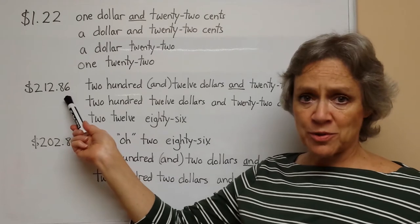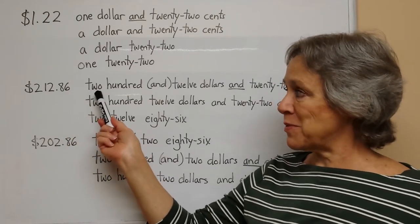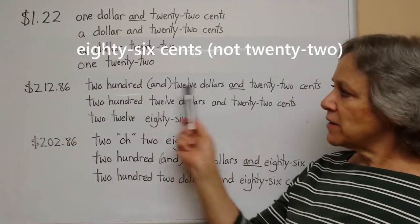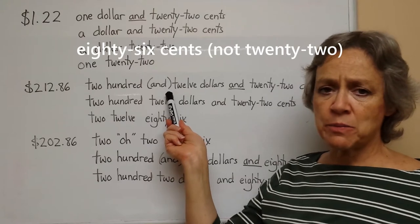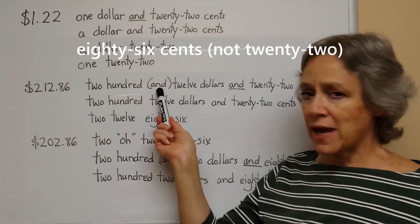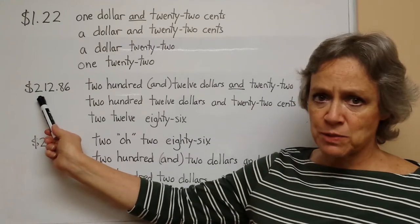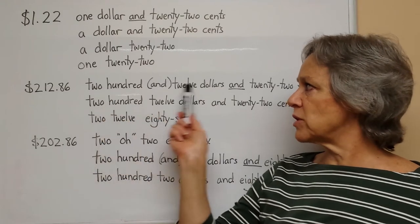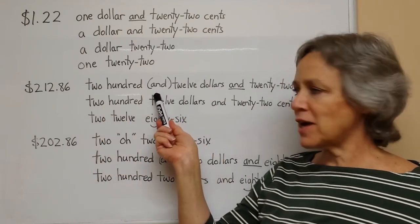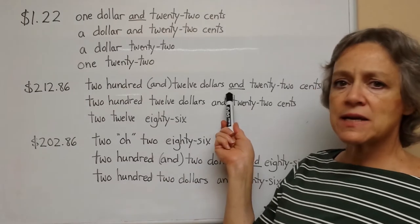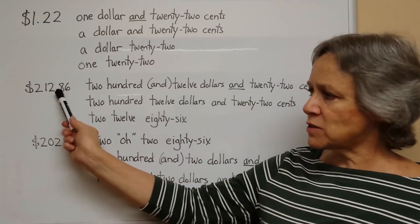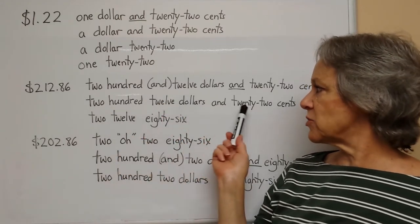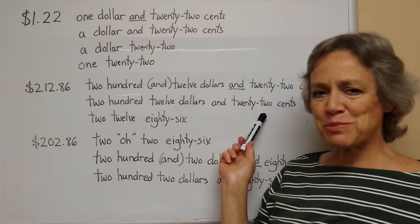For a longer number, many people would say 'two hundred and twelve dollars and twenty-two cents.' This first 'and' is not really correct, but many people do say it — many people put the word 'and' between a number in the hundreds place and any number following. So many people would say 'two hundred and twelve dollars.' That's not really correct, but many say it. The second 'and' is correct — it's for the decimal point. Without the first 'and,' it would be 'two hundred twelve dollars and twenty-two cents.' Some people also say it that way.